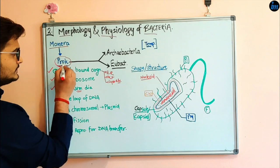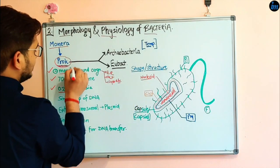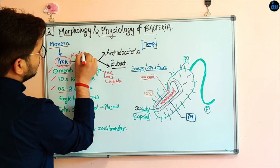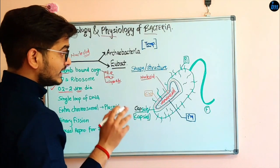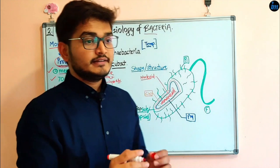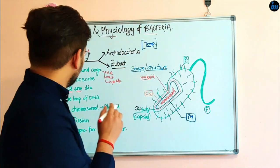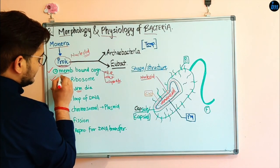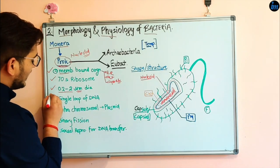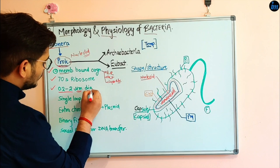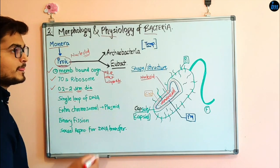Prokaryotes contain a false nucleus, which is why it is known as the nucleoid. They do have nuclear material — don't say they don't. So to recap: first, there is a lack of membrane-bound organelles; second, they have 70S ribosomes; third, they have a diameter of 0.2 to 2 micrometers; and there is a single loop of DNA.